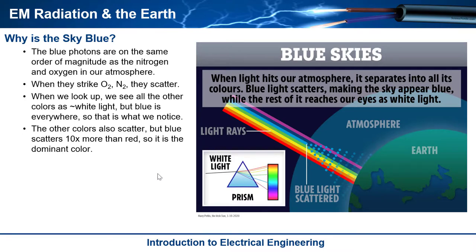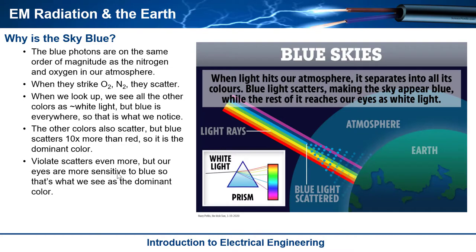But you know, you're sitting there going, well, what about blue? Blue isn't even at the end of the spectrum. Isn't violet? And it turns out, yes, violet does scatter more than blue. It's just that our eyes are more sensitive to blue. So we actually see more blue. That's the dominant color that we see.